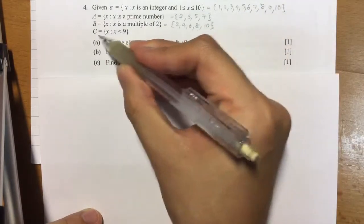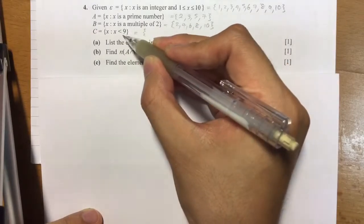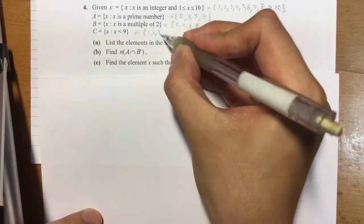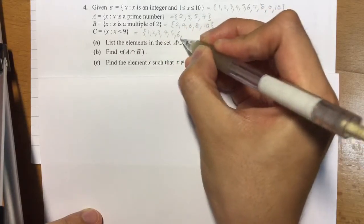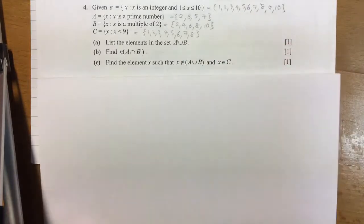Last but not least, set C. We have x is any number less than 9, not including the number 9. So we have 1, 2, 3, 4, 5, 6, 7 and 8. Okay, so there you have it. We've listed out all the elements. So now let's go on to answer the question.